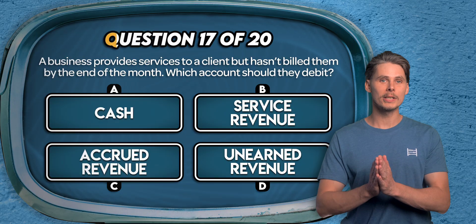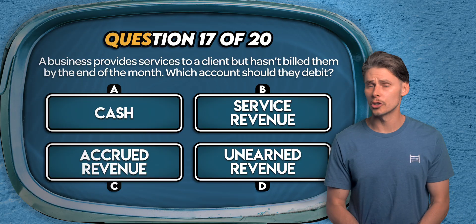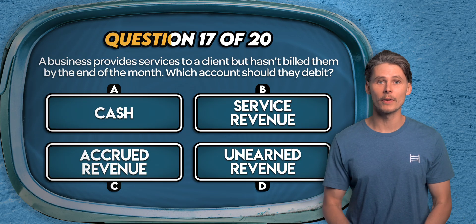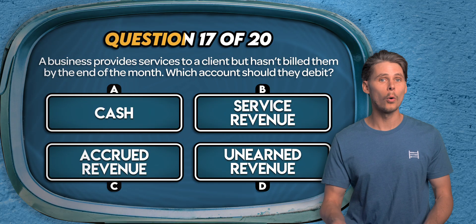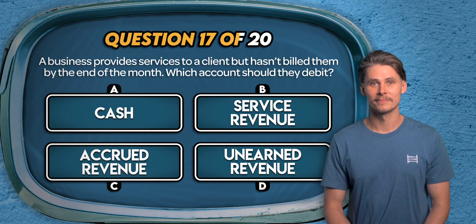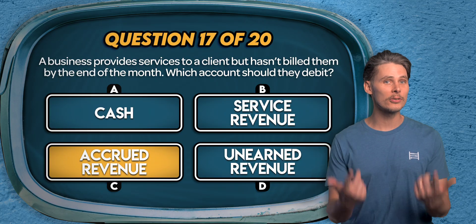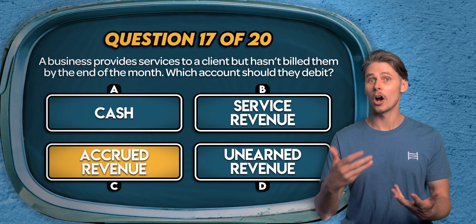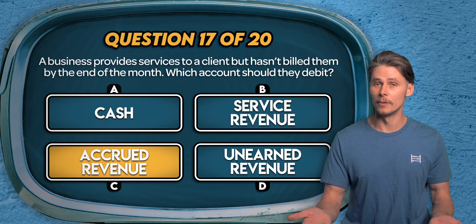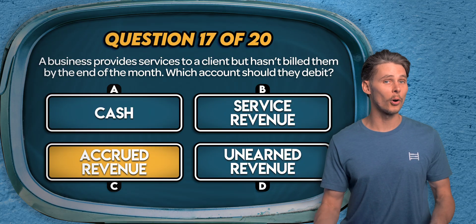Question 17. A business provides services to a client but hasn't billed them by the end of the month — which account should they debit? Is it cash, service revenue, accrued revenue, or unearned revenue? It's C — accrued revenue. The business should debit accrued revenue to increase assets on the balance sheet. This reflects the unbilled revenue owed to them by the client. The credit entry is to service revenue to record the income earned.